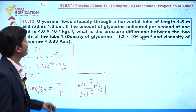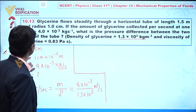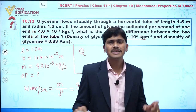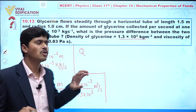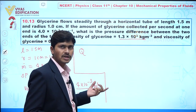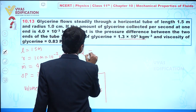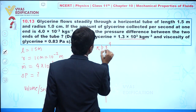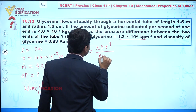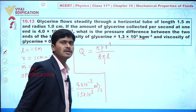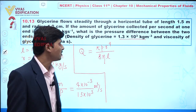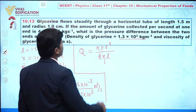Now we can find the pressure difference between the two ends of the tube. We have a horizontal capillary tube — I call it a capillary tube because its radius is very small compared to its length. The rate of flow is given by Poiseuille's formula: Q equals pi times P times r to the power 4, divided by 8 times eta times l.